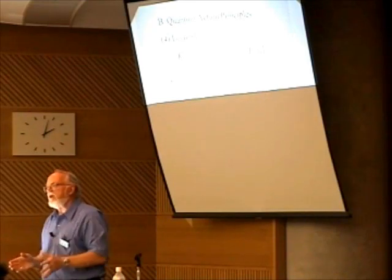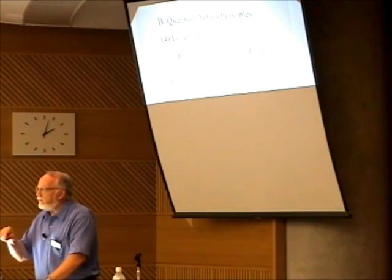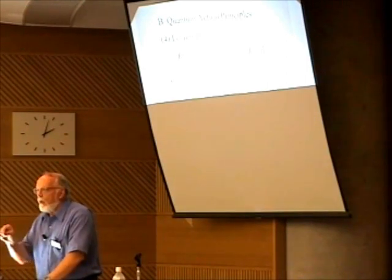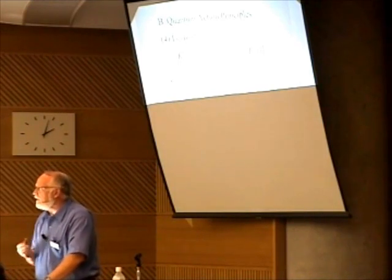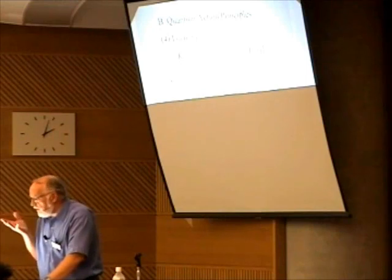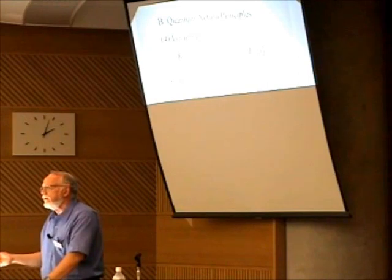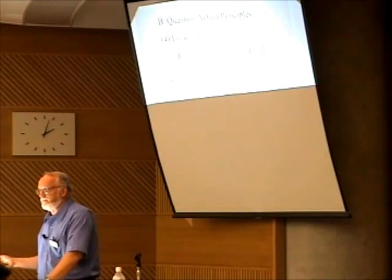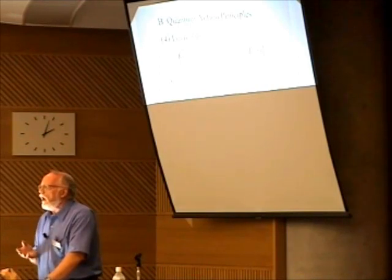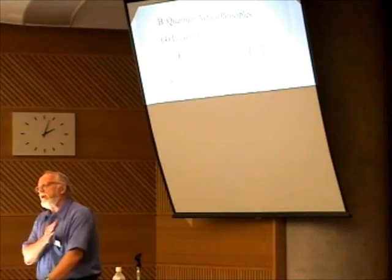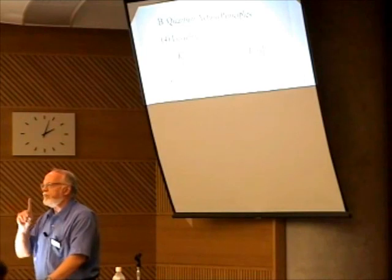He looks at the Hamiltonian problem and says: the problem is, we think the particle is selecting one real path, because there's only one real path as predicted by Newton. We know the Hamiltonian solution will descend on the Newtonian solution through the Euler-Lagrange solution. So Feynman said, obviously we've made a wrong assumption somewhere — and that wrong assumption is that there's only one path.